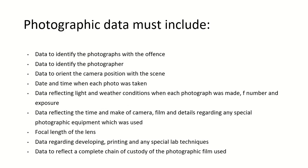First we will talk about what are the important constituents of photographic data. The data must include photographs to identify the offense, to identify the photographer, to orient the camera position with the scene, date and time when each photo was taken, data reflecting light and weather conditions, F number and exposure, data reflecting the time and make of camera, film and details regarding any special photographic equipment used, focal length of the lens, data recording, developing, printing and any special lab techniques, and data to reflect a complete chain of custody of the photographic film used.